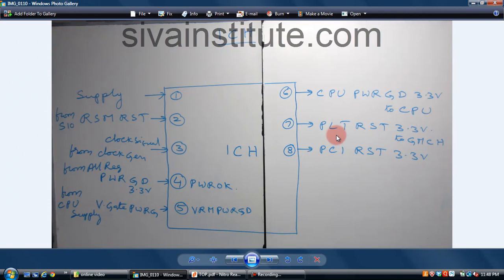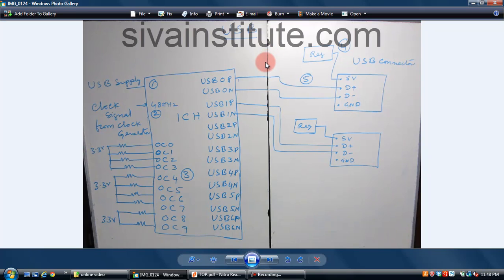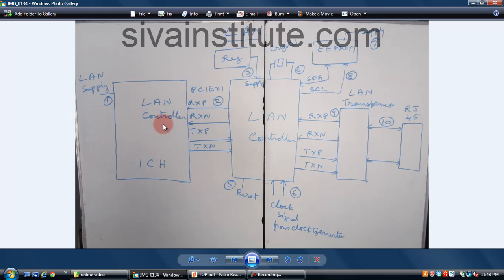This is a 1 hour lesson, nearly 30 minutes. How to check ICH — if these 3 supplies are OK, then ICH is OK. If there is no voltage, you should check all input pins. How to check GMCH — if this voltage is OK and this voltage is OK, then GMCH is OK. If there is no voltage, check input pins. This is also a 1 hour lesson. USB ports — how a USB port works, total USB port fault or single USB port fault — I will explain. LAN — how LAN works, what are the connections.